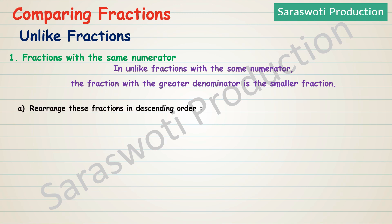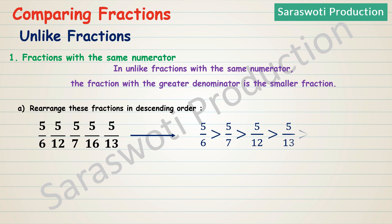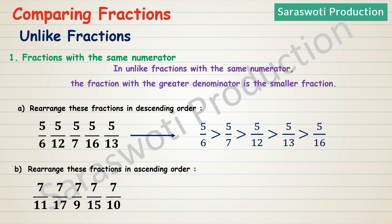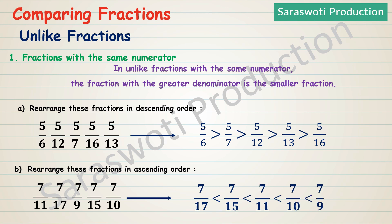For example, rearrange in descending order: 5/6, 5/12, 5/7, 5/16, and 5/13. The answer: 5/6 > 5/7 > 5/12 > 5/13 > 5/16. Now pause the video and rearrange the next set in ascending order by yourself, then resume to see the answer. The answer is: 7/17 < 7/15 < 7/11 < 7/10 < 7/9.